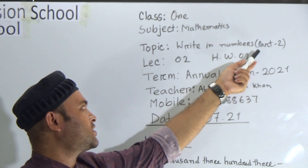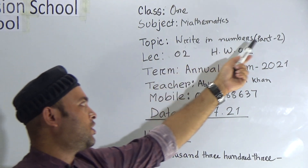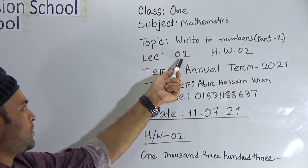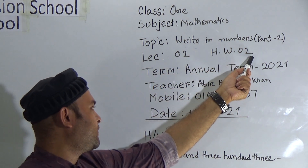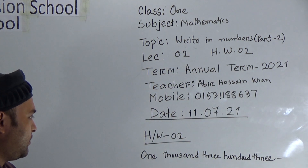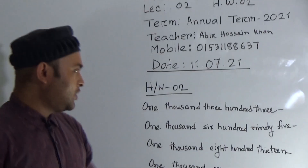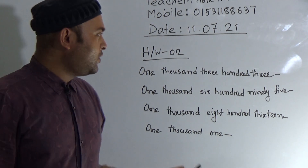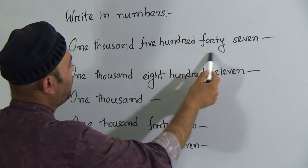Today I'm going to take a Mathematics class for Class One. Our today's topic is Writing Numbers, Part Two. You have already learned Part One, so today's lecture is Part Two. Our homework number is two — you will submit this homework on your school campus next Saturday. Now let's start our class.